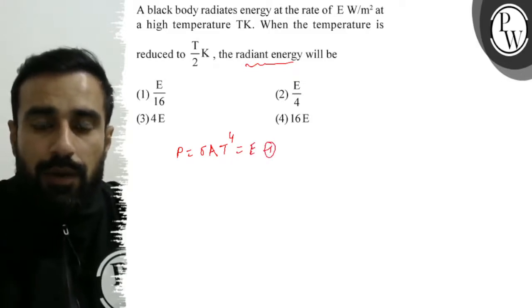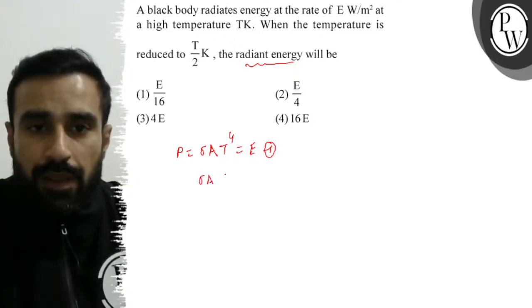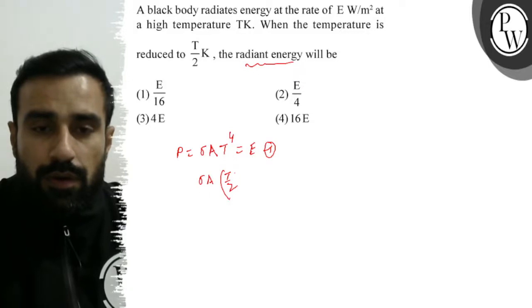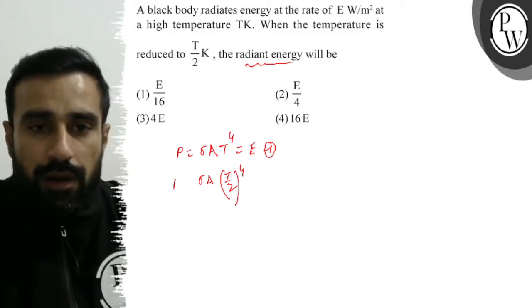Now suppose that the power is E dash when temperature is T by 2. Then it will be sigma A, T by 2 to the power 4 is the new power of radiation.